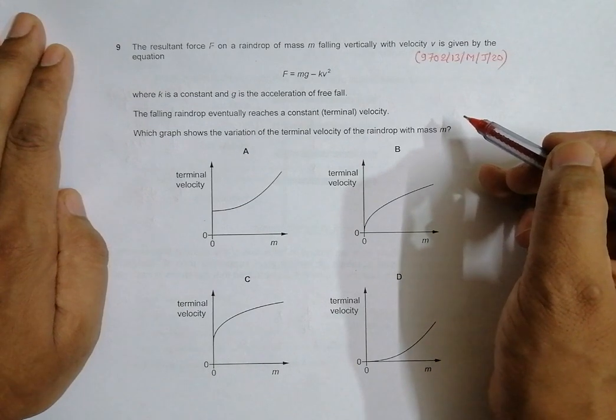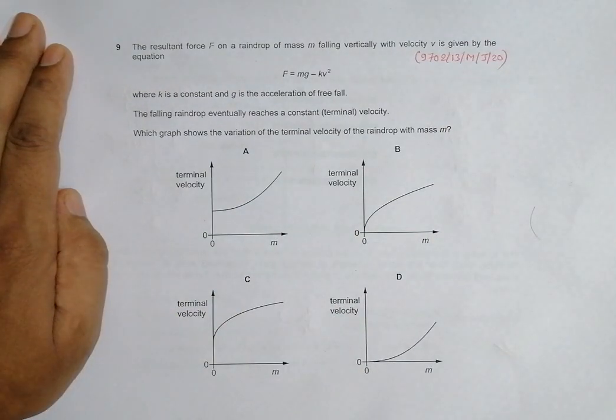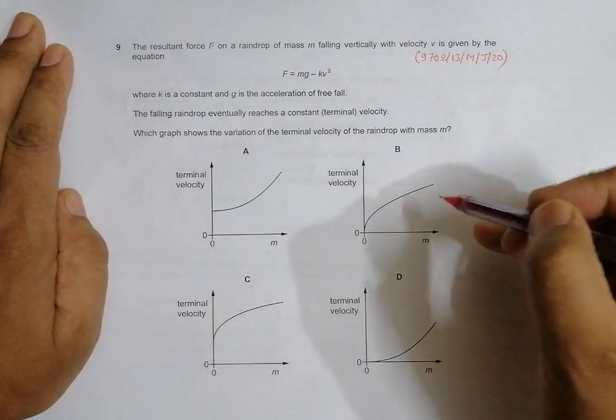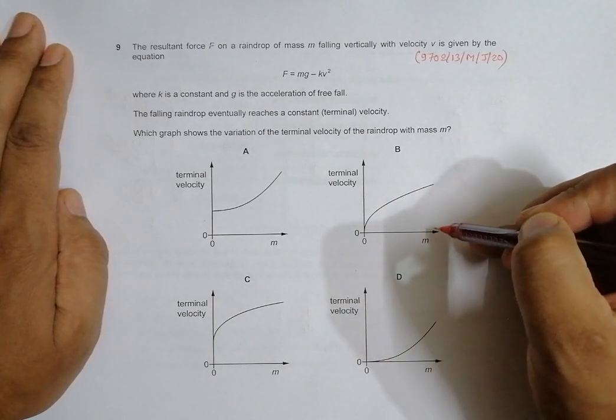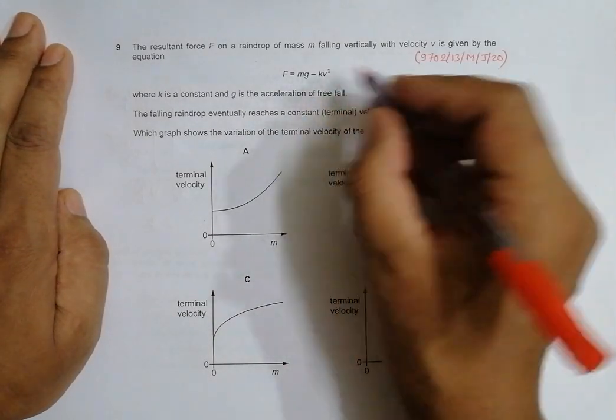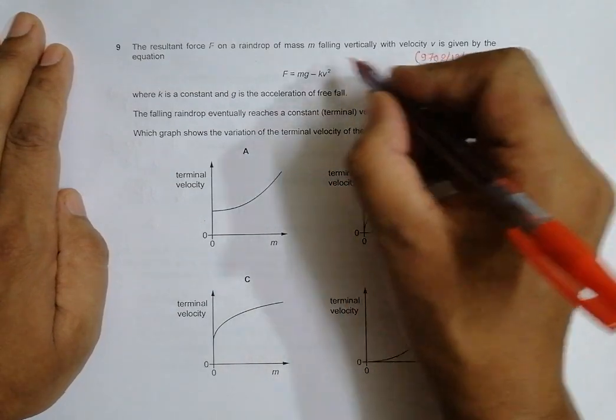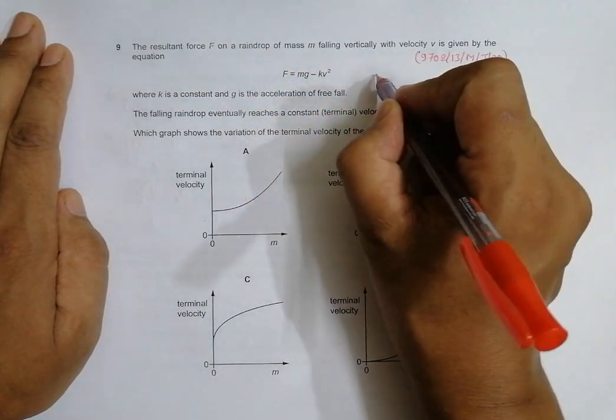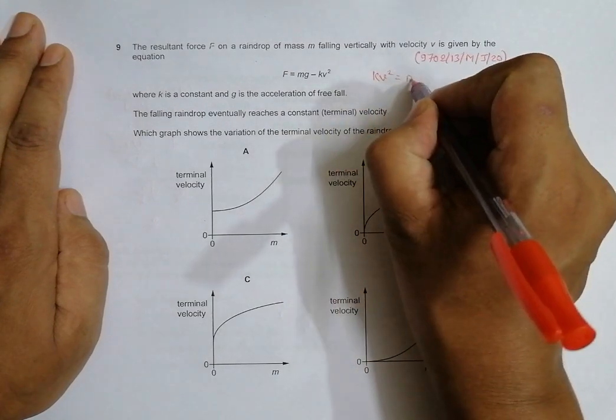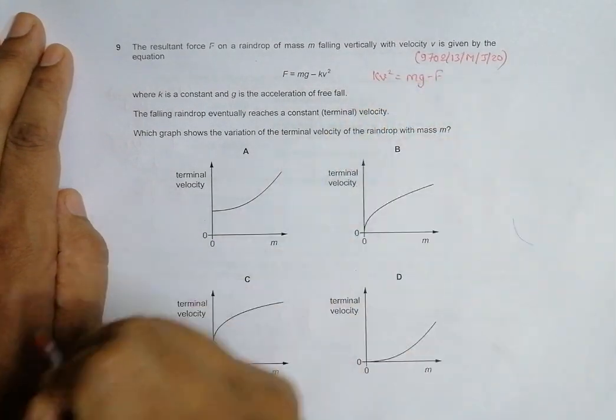Till now we used to do only the variation of velocity with time. Now we have to see the variation with mass, so let's change the equation. We have to go for velocity versus mass, so kV squared should be equal to mg minus F.